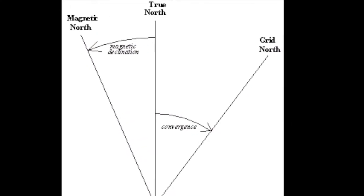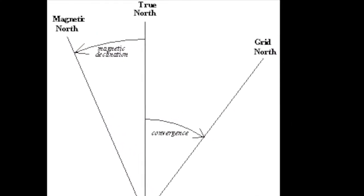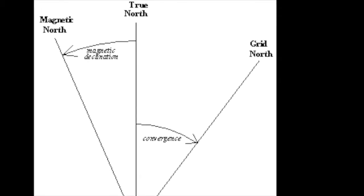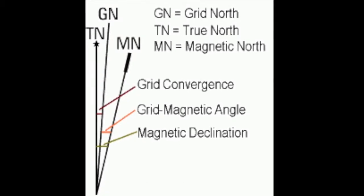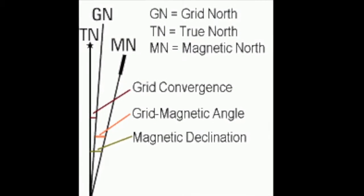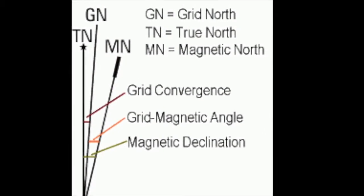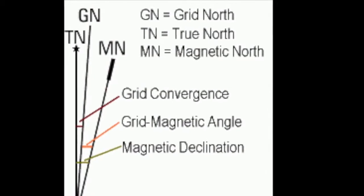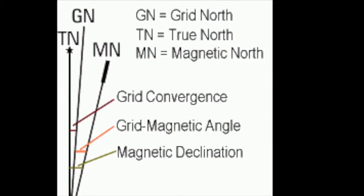Grid convergence is the difference between true north and grid north. Grid magnetic angles are the difference between magnetic north and the grid north.